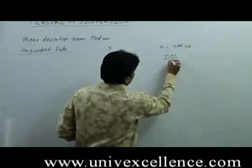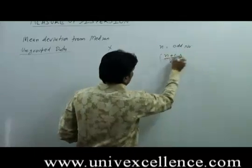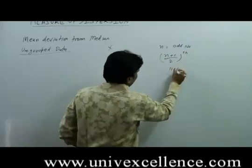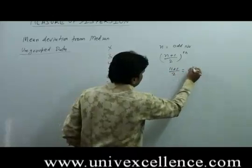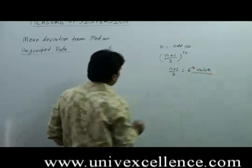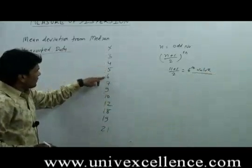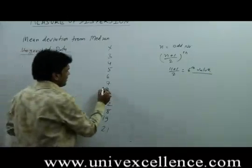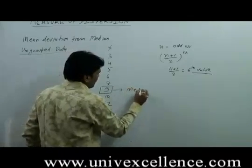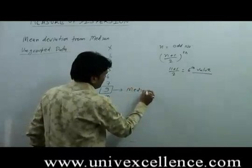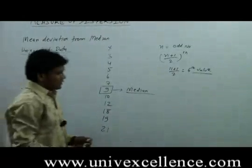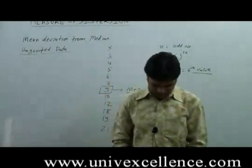...the median would be the (n+1)/2 th value. So the median would be the (11+1)/2 = 6th value. Counting: 1, 2, 3, 4, 5, 6 — the 6th value is 9. So 9 is the median of the data.